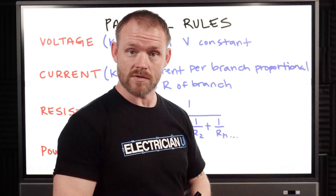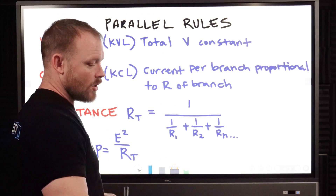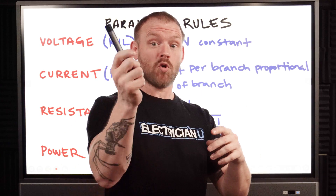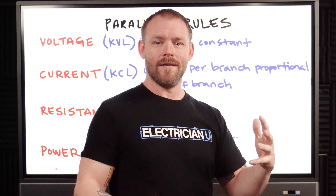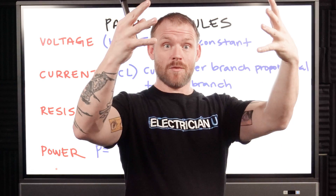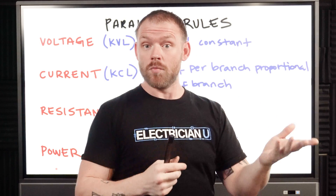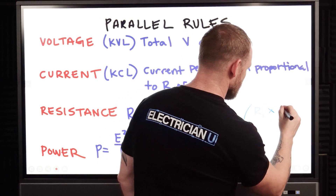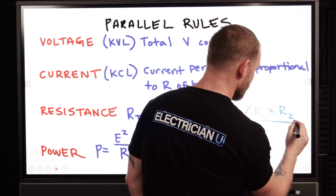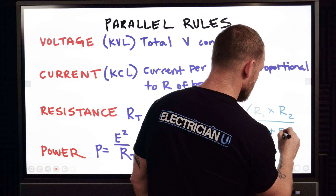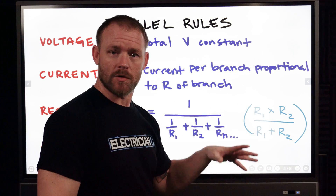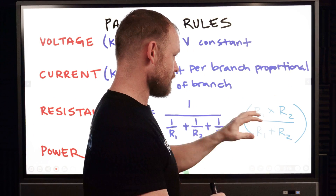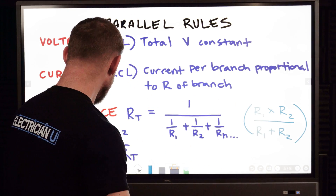There's also the product-over-sum method, which works when you have exactly two resistors in a parallel circuit. You multiply the two resistances together (the product) and divide by their sum. For example, two ohms and four ohms: two times four over two plus four. The formula is R1 times R2 over R1 plus R2. You still get the same answer as the inverse-sum method, but it's only valid for two resistors — use the full formula for three or more.